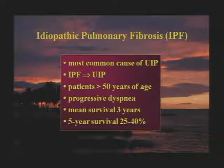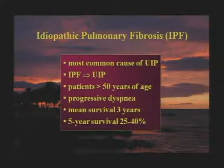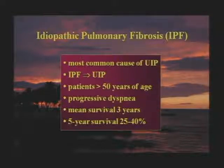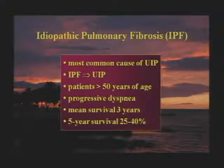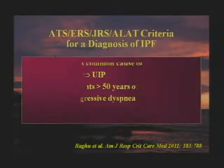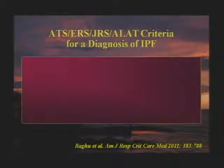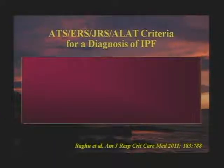IPF is the most common cause of UIP. If you have IPF, your histology must be UIP. Patients are usually older than 50 at diagnosis, with progressive dyspnea. Mean survival is only about three years; five-year survival is 25 to 40%. Having IPF is basically like having lung cancer — very difficult to treat and not very responsive. Recently, the American Thoracic Society, European Respiratory Society, Japanese Respiratory Society, and Latin American Thoracic Association agreed on criteria for making a diagnosis of IPF.